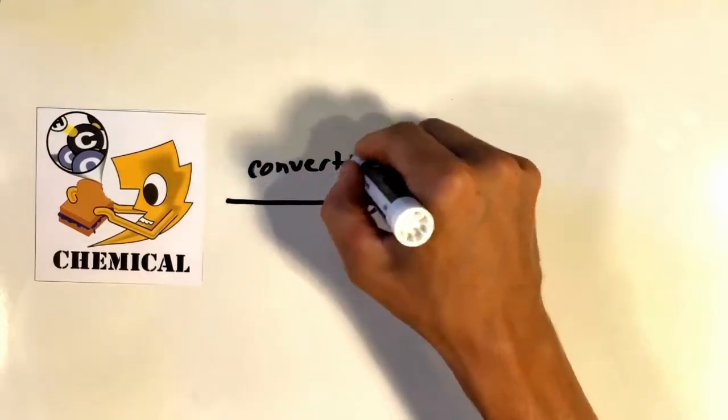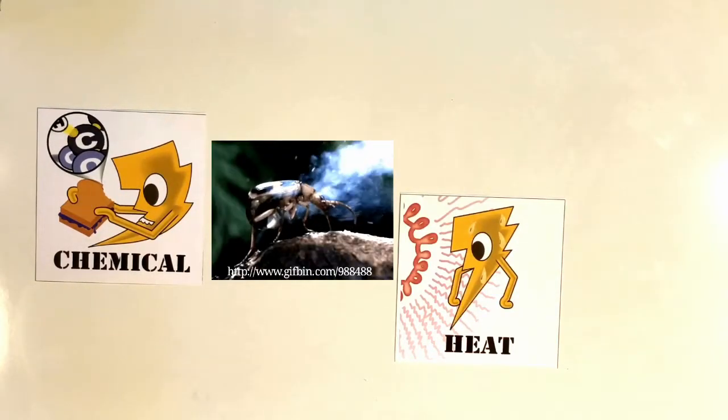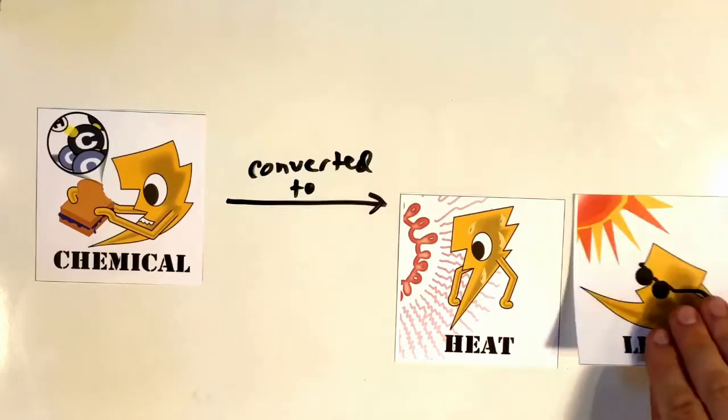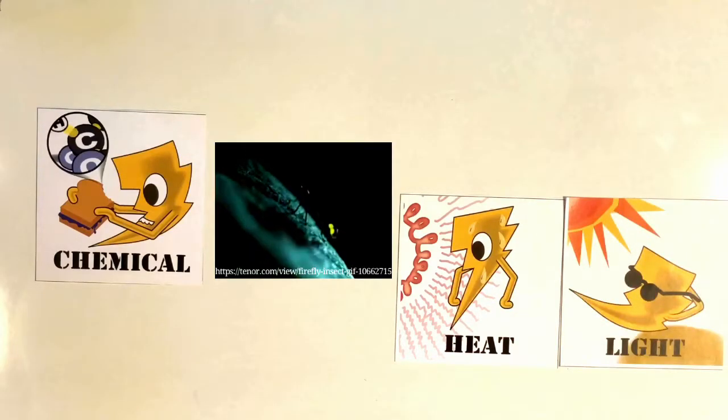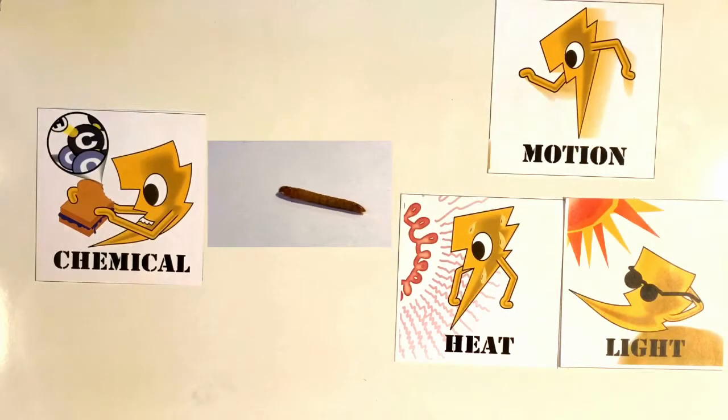Now chemical energy can be converted into a variety of forms, including heat, as is the case with this bombardier beetle, light, in the example of fireflies, certain underwater creatures, and even glowing fungi, and motion, which we already saw in our mealworms.